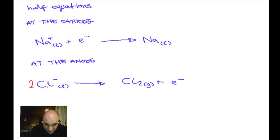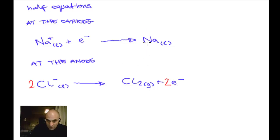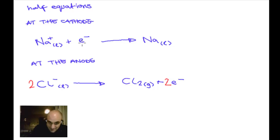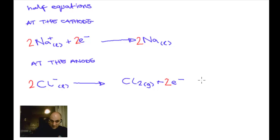Now we've got two half equations that work on their own but need to balance each other. To balance the electrons: the anode equation has 2e⁻ and the cathode has 1e⁻, so we multiply the cathode equation by 2: 2Na⁺(l) + 2e⁻ → 2Na(l). Now both half equations are balanced by the same number of electrons.